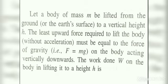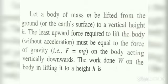Let a body of mass m be lifted from the ground to a vertical height h. The least upward force required to lift the body without acceleration must be equal to the force of gravity, that is F = mg, acting vertically downwards. So the force required to lift the object to height h equals the force of gravity.